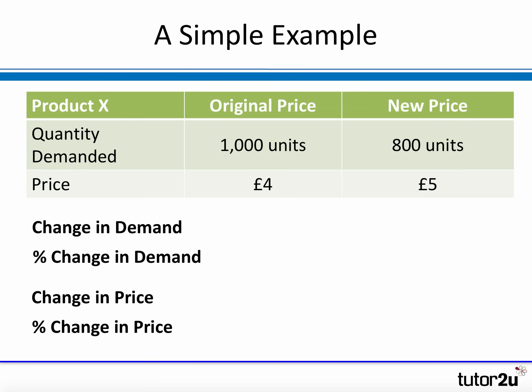Let's look at a simple example. We've got product X. Originally at a price of £4 per unit, the quantity demanded was 1,000 units. When we change the price from £4 to £5 — a price increase — the quantity demanded falls from 1,000 units to 800 units. To calculate PED we need the percentage changes in demand and in price. Demand has fallen by 200 units; expressed as a percentage of the original demand of 1,000, that's 200 divided by 1,000 times 100 — a fall of 20%.